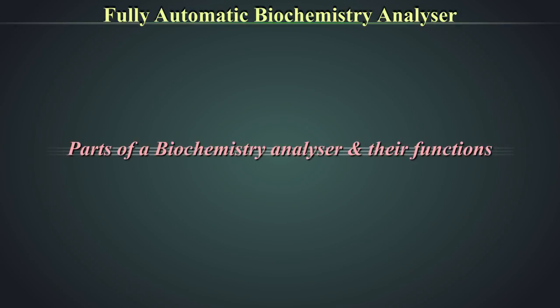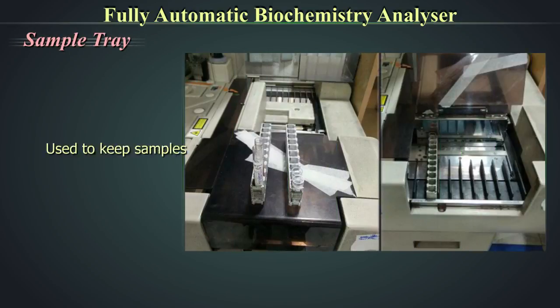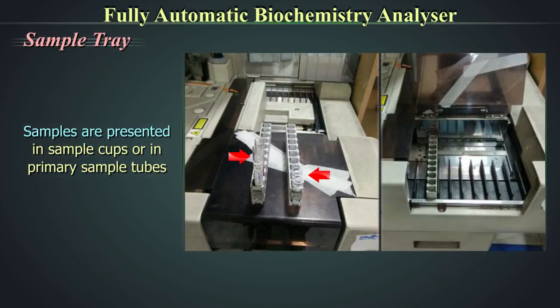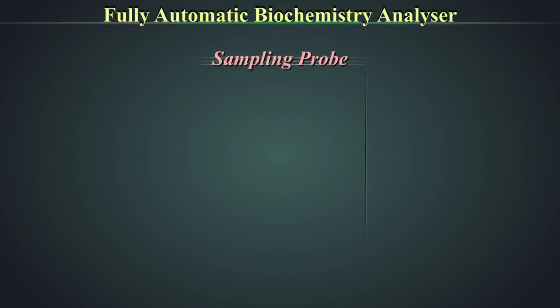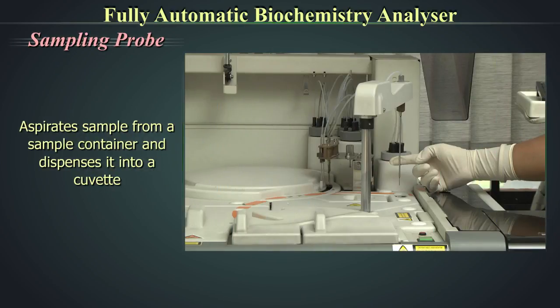Parts of a biochemistry analyzer and their functions: The sample tray is used to keep samples, which may be presented in sample cups or in primary sample tubes. The analyzer may have onboard barcode reading capacity or manual entry of sample ID. The sampling probe aspirates sample in conjunction with the sample syringe from a sample container and dispenses it into a cuvette.